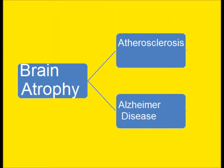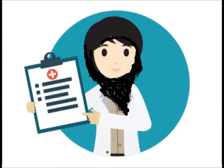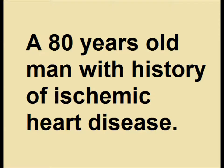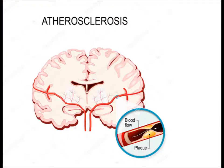There are two causes of brain atrophy: atherosclerosis and Alzheimer's disease. The first clinical scenario is an 80-year-old man with a history of ischemic heart disease. Ischemia means decreased blood supply, and ischemic heart disease also causes narrowing of the carotid arteries, leading to ischemia of the brain. In atherosclerosis, plaque formation and deposition of atheroma or lipid in the arterial wall leads to narrowing of the lumen and diminished blood supply.